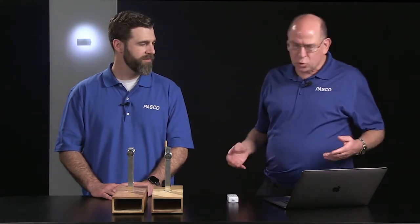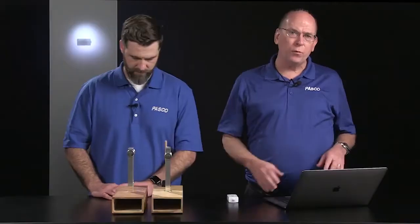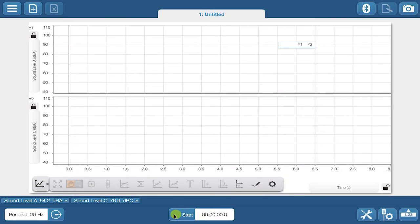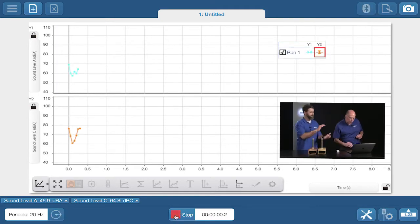Can you show us an example? Sure. We have the wireless sound sensor connected to SparkView and a graph of DBA weighting on the top and DBC on the bottom. Clap your hands a few times and let's see the difference.